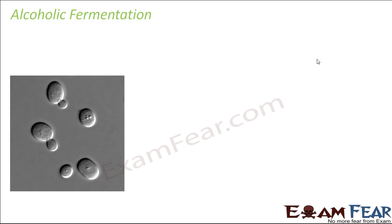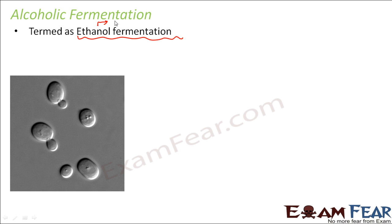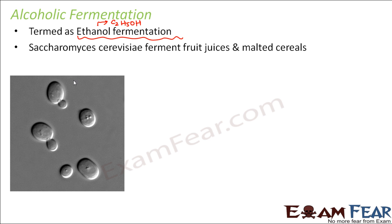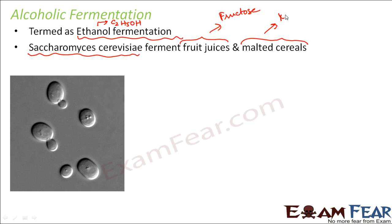The process of alcohol formation is known as alcoholic fermentation, also called ethanol fermentation, because the product is ethanol — C2H5OH. The yeast Saccharomyces cerevisiae ferments fruit juices and malted cereals. Malted cereals contain maltose, while fruit juices contain fructose and sucrose. These sugar molecules — fructose, sucrose, and maltose — all get converted into ethanol and carbon dioxide, and a lot of energy is released during this process.